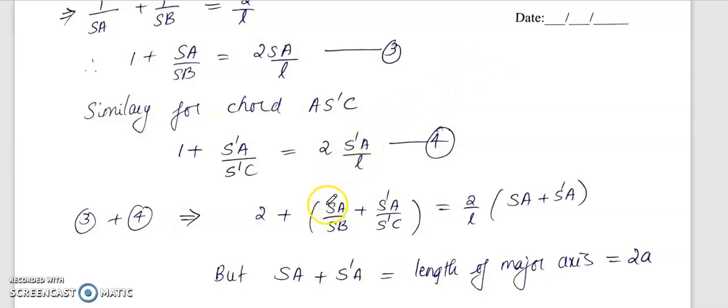When we add equation 3 and 4, you will get 2 plus SA by SB plus S'A by S'C equal to 2 by l times SA plus S'A for an ellipse.